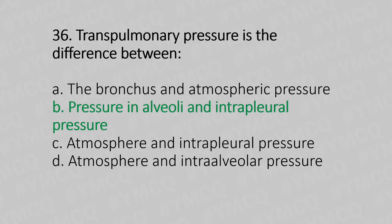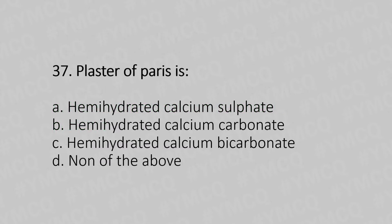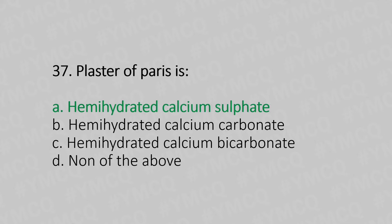Question 37: Plaster of Paris is — Option A: hemi-hydrated calcium sulphate. Option B: hemi-hydrated calcium carbonate. Option C: hemi-hydrated calcium bicarbonate. Option D: none of the above. The answer is Option A: hemi-hydrated calcium sulphate.